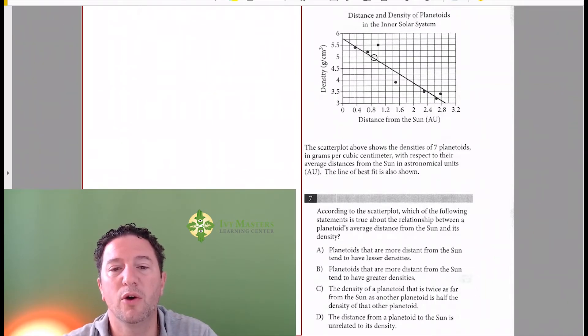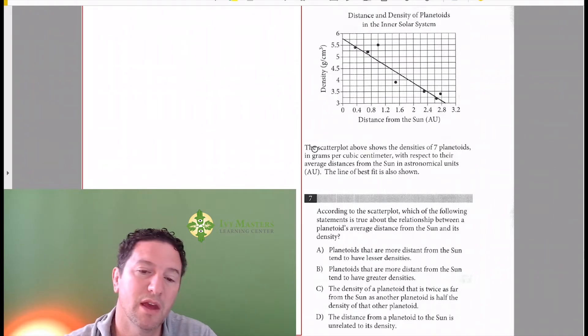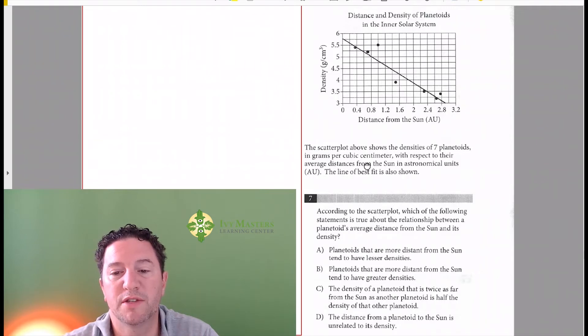You see a line going down, which always means one thing's increasing as another thing's decreasing. So as the distance from the sun increases, the density of the planetoid is decreasing. Now we read below it: the scatter plot shows the densities of seven planetoids in grams per cubic centimeter with respect to the average distance from the sun in astronomical units (AU). The line of best fit is also shown.